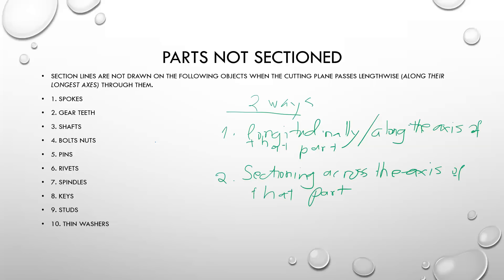We are going to be looking at the following parts. If you encounter any of these parts in an assembly and it is sectioned longitudinally or across, how do you section it? We have spokes, gear teeth, shafts, bolts, nuts, pins, rivets, spindles, keys, studs, and thin washers. All these parts are not to be sectioned when they are aligned in a certain way.